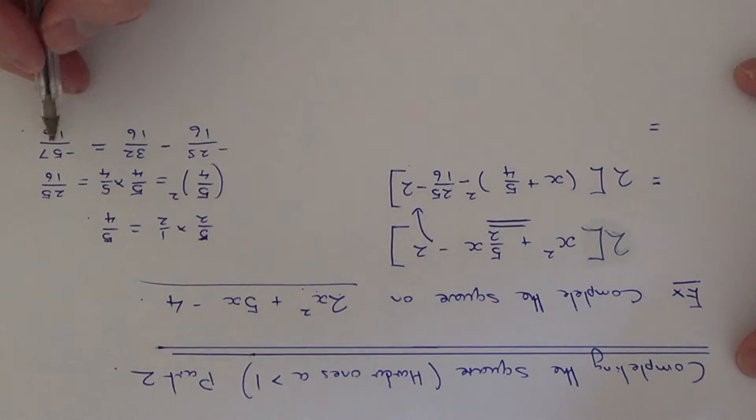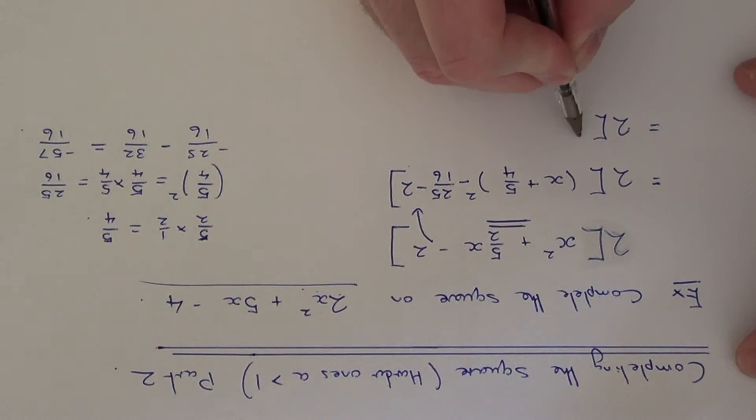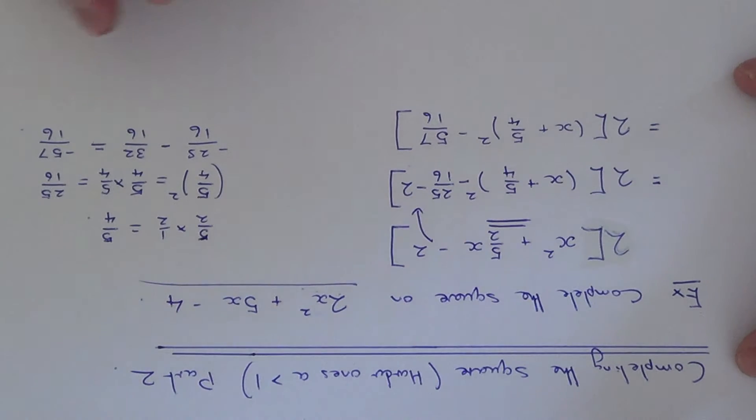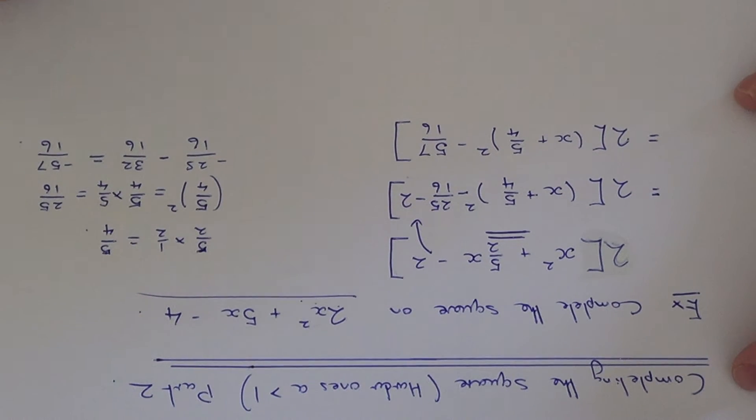So if we just copy this line out again. So the final step then is just to get rid of the big square bracket now. So do this by multiplying by the 2 here.